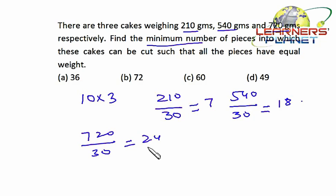So in all, 24 plus 7 plus 18, that is 49 pieces will be there of 30 grams. The answer is option (d) 49.